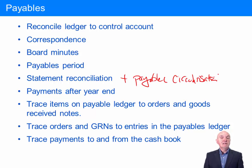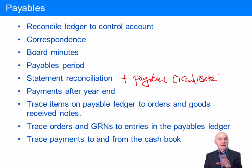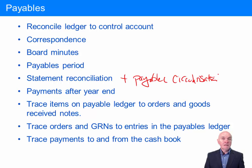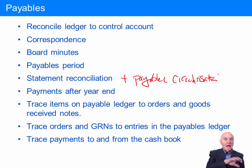We can trace items on the payables ledger — why and how does a balance get there? It must be there because of an invoice, and the invoice is there because of a goods received note, and the goods received note is there because we placed an order. If a payable comes off the payables ledger, it must have been paid. So we can trace payments to and from the cash book to see why a payable was removed — say, on the 15th of December — and verify that the money went out to that supplier in the cash book.